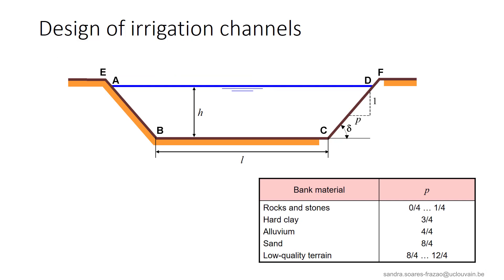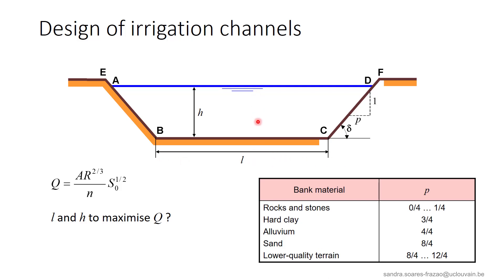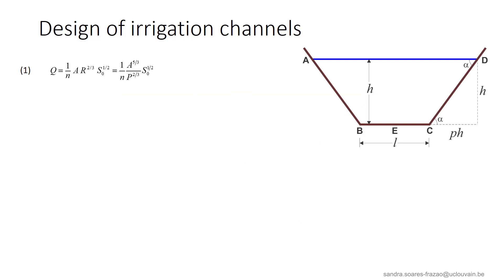In general, the bed material is known, and thus also the bank slope. The bed slope is fixed by the general layout of the system, and the Manning coefficient n is known as the material of the channel is known — for example, it can be concrete or earth. The dimensions to be determined are the bottom width L and the depth H, with the aim of maximizing the discharge. From equation 1, we see that to maximize the discharge, we need to maximize the wetted area and minimize the wetted perimeter P. So we look for the values of L and H that will fulfill these conditions.